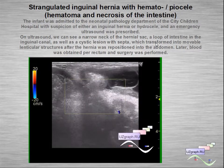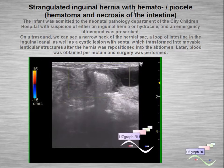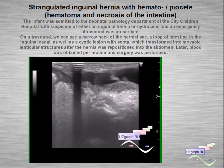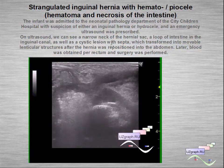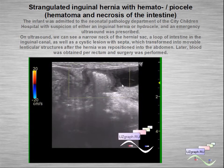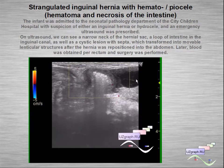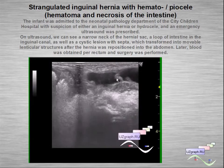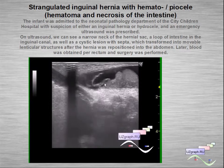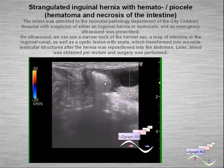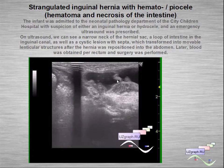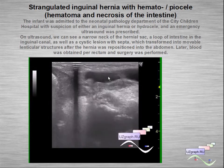Now an example of strangulated inguinal hernia with hematopeia and necrosis of intestine. On ultrasound we can see a narrow neck of the hernial sac, intestinal loops, and some lesion with septa which represents hematopeia. After attempted correction of the hernia we can see a lenticular structure in the inguinal canal. After reposition, blood was obtained per rectum and surgery was performed in this case.